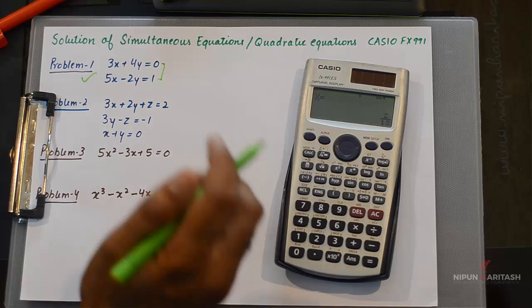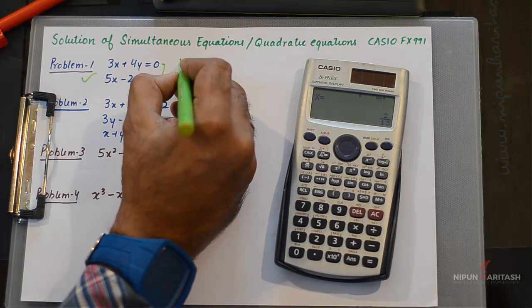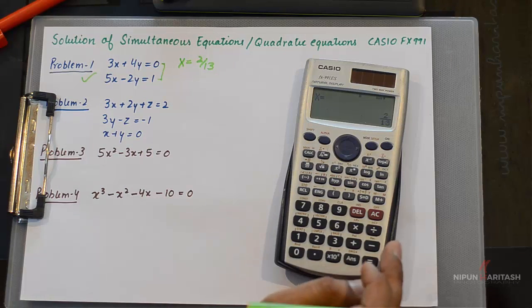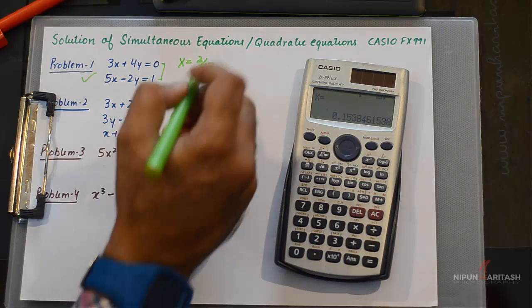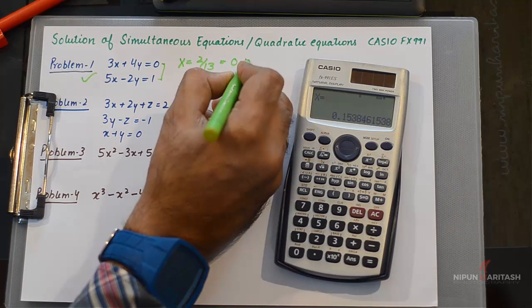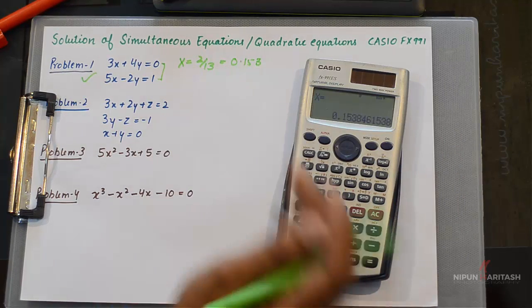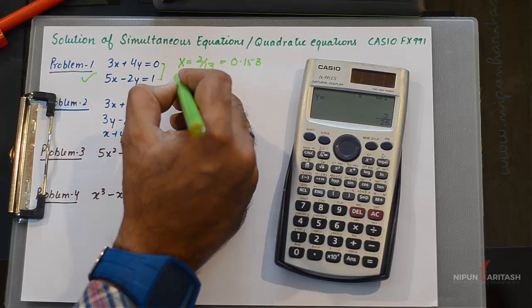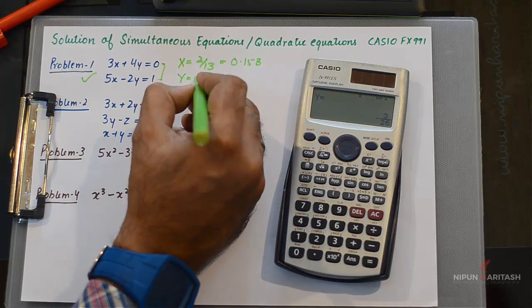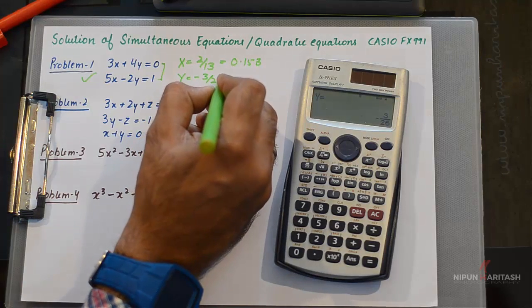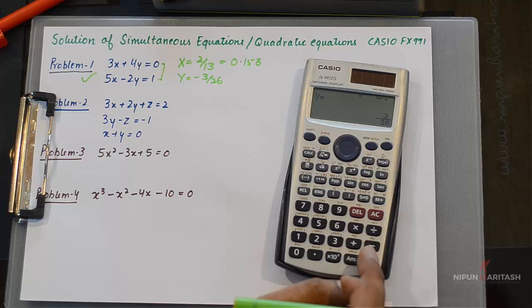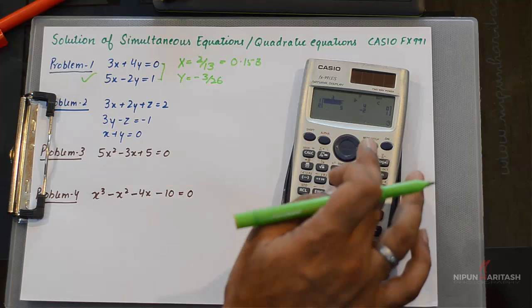That gives you the value of X equal to 2/13. Then you need to press Y and equal again to get the value of Y, which is -3/26.